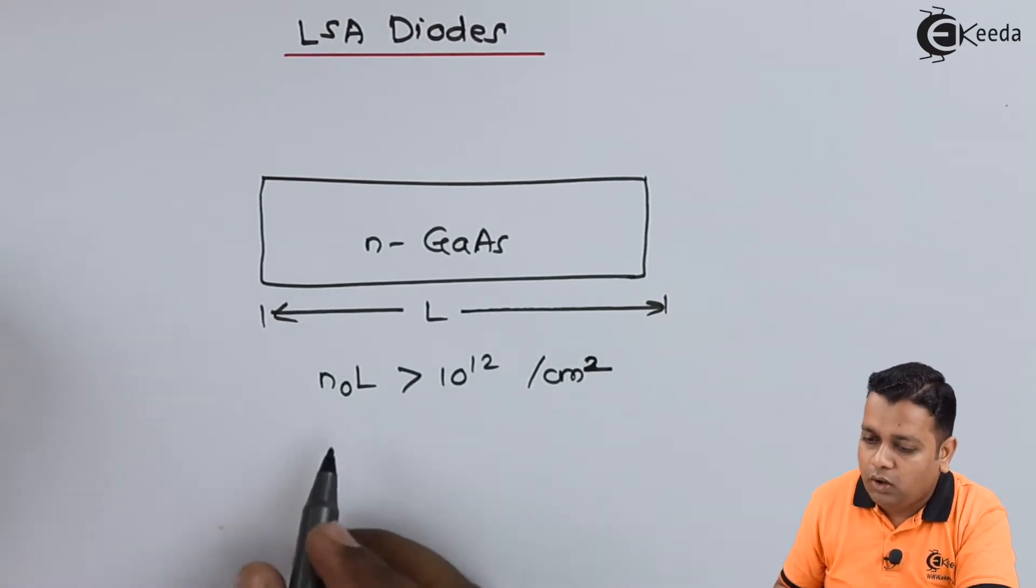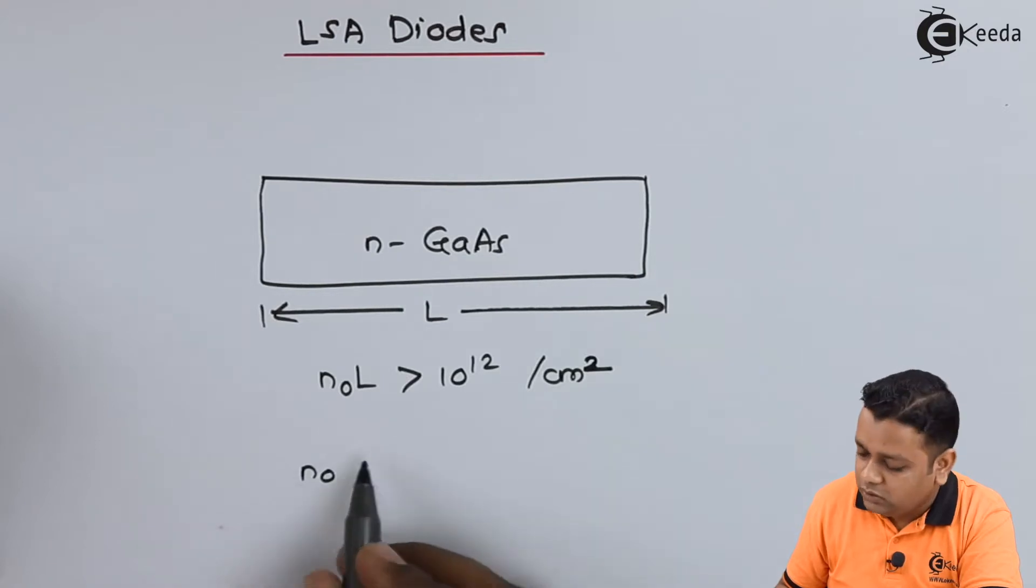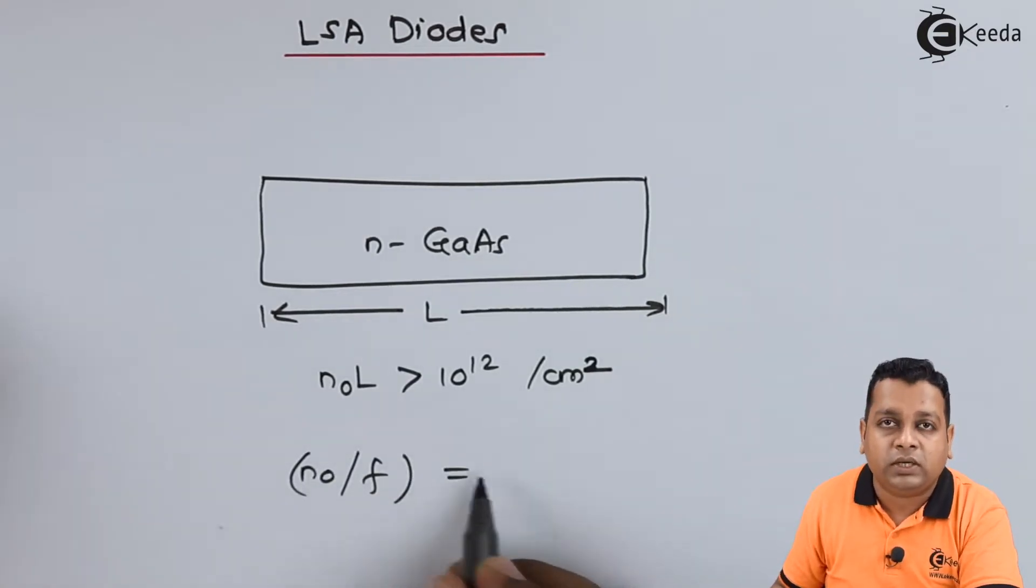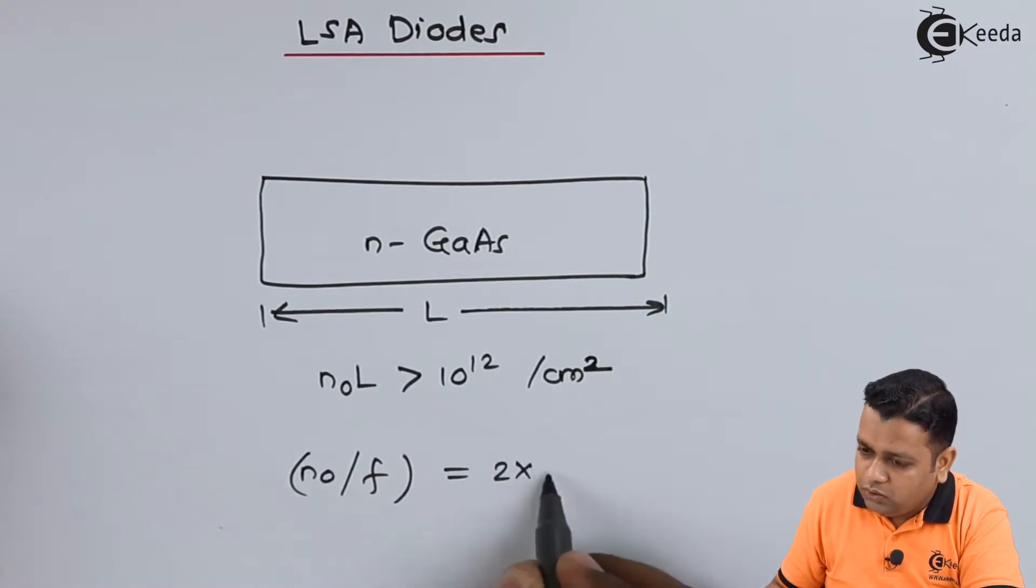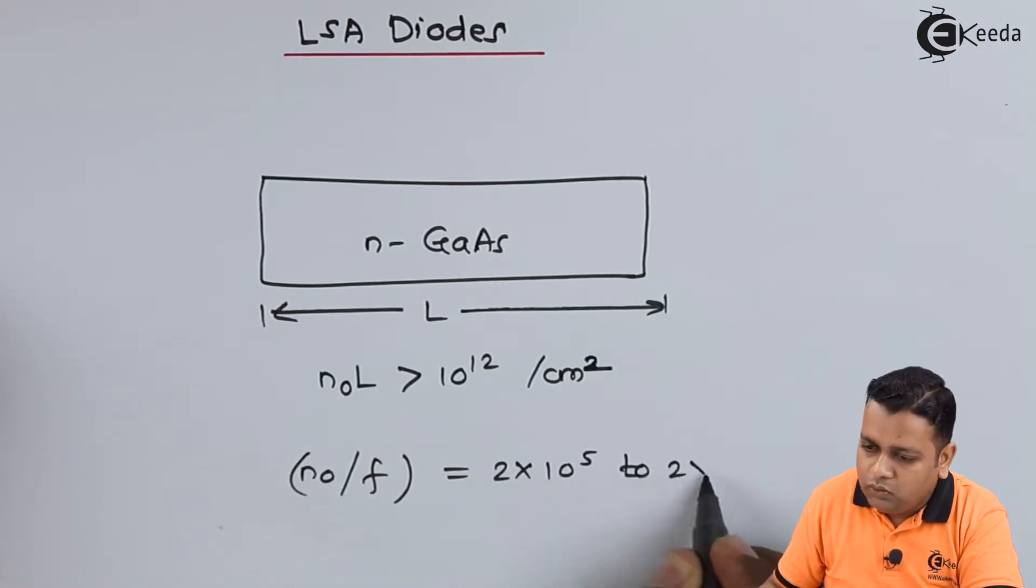It is the ratio of doping concentration n0 to the operating frequency F. So this ranges between 2 into 10 raised to the power 5 up to 2 into 10 raised to the power 4 seconds per centimeter cube.